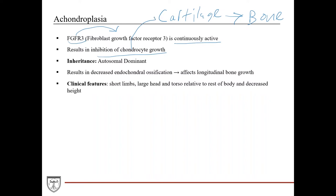Because FGFR3 is continuously active, it actually inhibits chondrocyte growth. Chondrocytes are cells within cartilage that are responsible for synthesizing new cartilage and maintaining it, which then would indirectly contribute to the process of cartilage becoming bone. So if you decrease this, you're going to decrease bone development. You're also going to decrease endochondral ossification, which is the process by which cartilage becomes bone. This affects longitudinal bone growth, especially in the extremities such as the femur or the humerus.